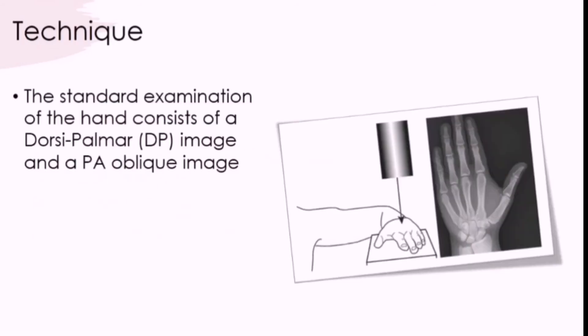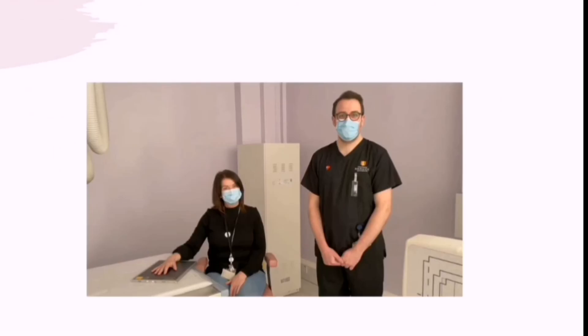The standard examination of the hand consists of a dorsi-palmar and a PA oblique image. For the DP image, the hand is flat on the x-ray receptor at the level of the shoulder with the elbow in 90 degrees of flexion. The x-ray beam passes from dorsal to palmar — that's why we call it a DP hand. For the PA oblique, you rotate the hand about 45 degrees to achieve that projection.